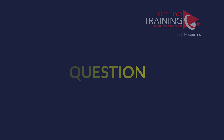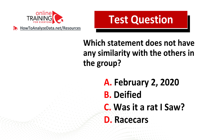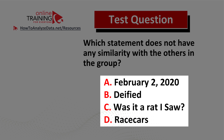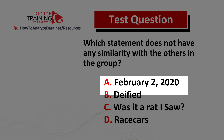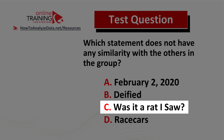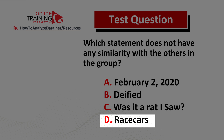Here's a tricky question from the real test. Which statement does not have any similarity with the others in the group? You have four different choices: Choice A, February 2nd 2020. Choice B, day fight. Choice C, was it a red I saw? And choice D, race cars.